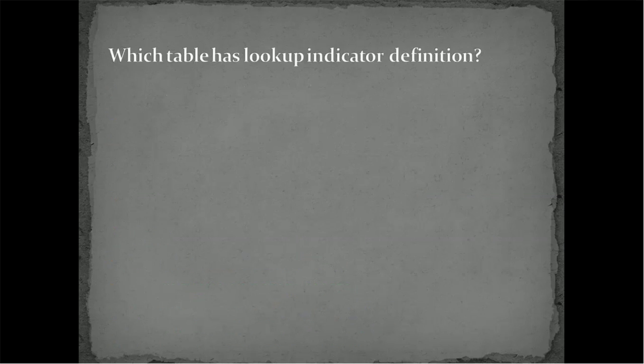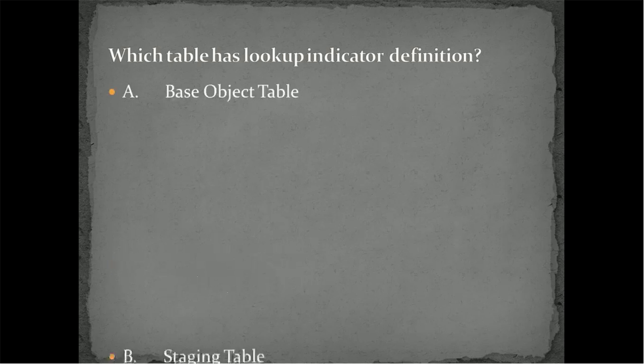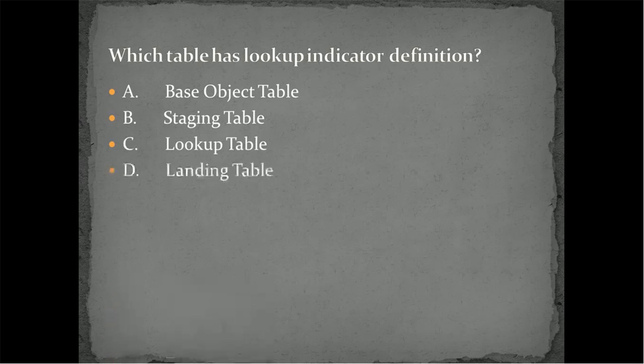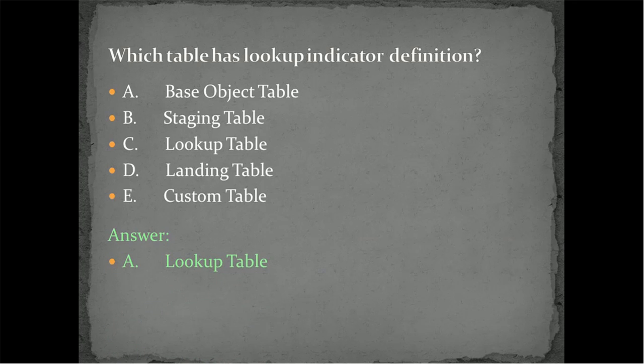Next quiz question. Which table has lookup indicator definitions? And the options are: base object table, staging table, lookup table, landing table, and custom table. And the answer is, definitely you got it, lookup table.